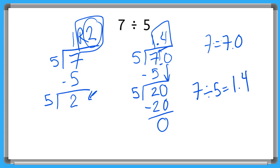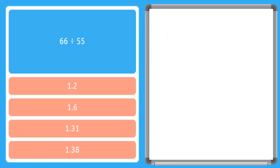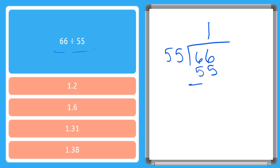Alright, let's try some harder problems together now. The first problem says 66 divided by 55. So let's write it out. 55 goes into 66 how many times? We know 55 goes into 66 one time, so we put a 1 up here. 1 times 55 is 55. We subtract and we get 11 down here.